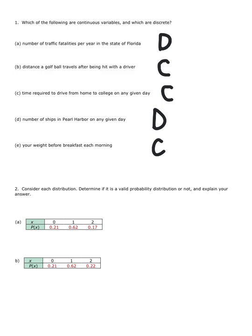Consider each distribution. Determine if it's a valid probability distribution or not. Explain your answer. Probabilities are discrete, so the top rows on each chart are integers. That's good.